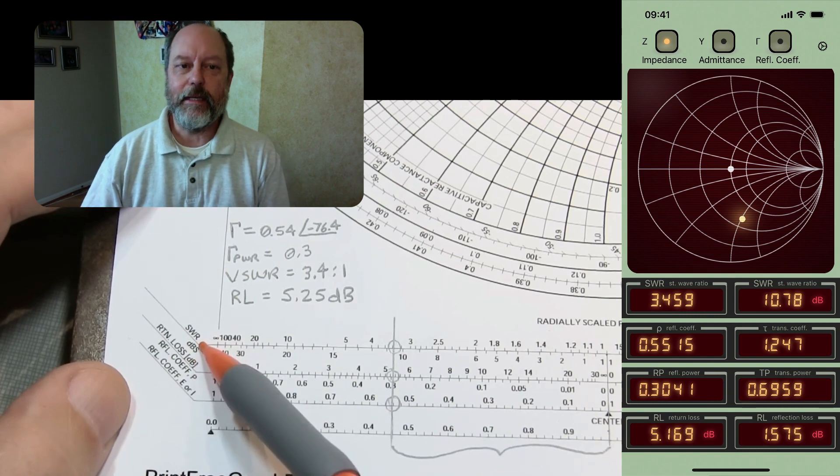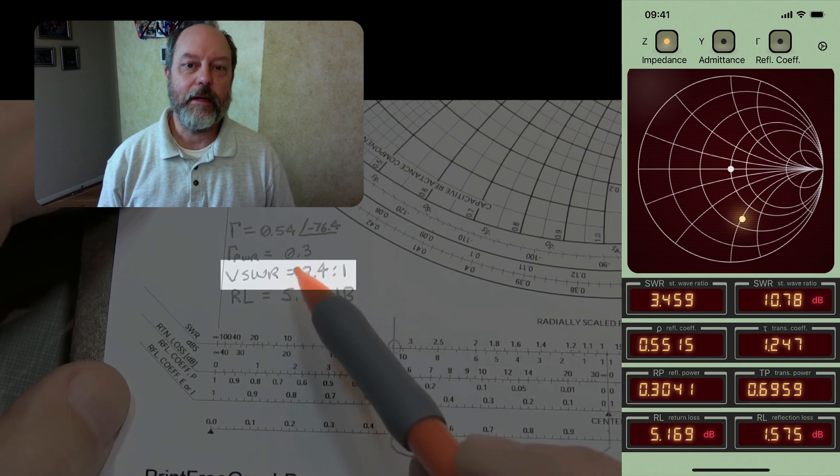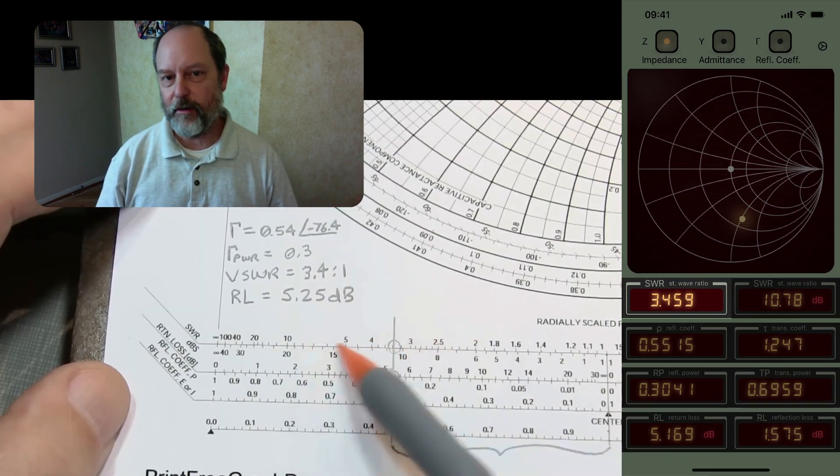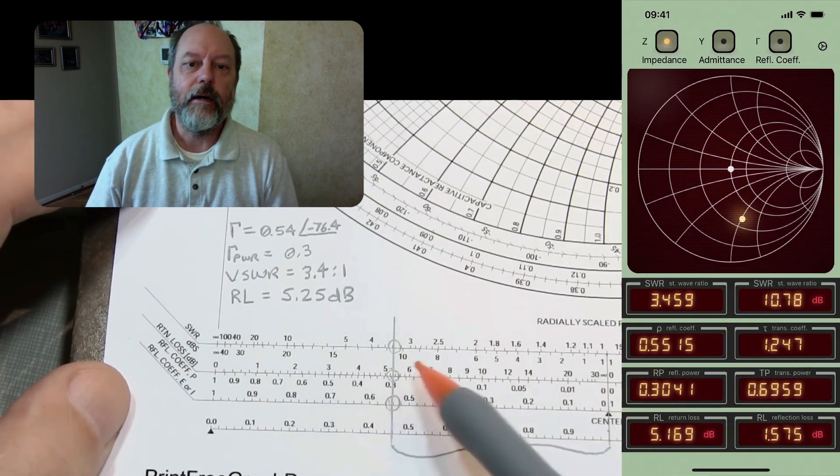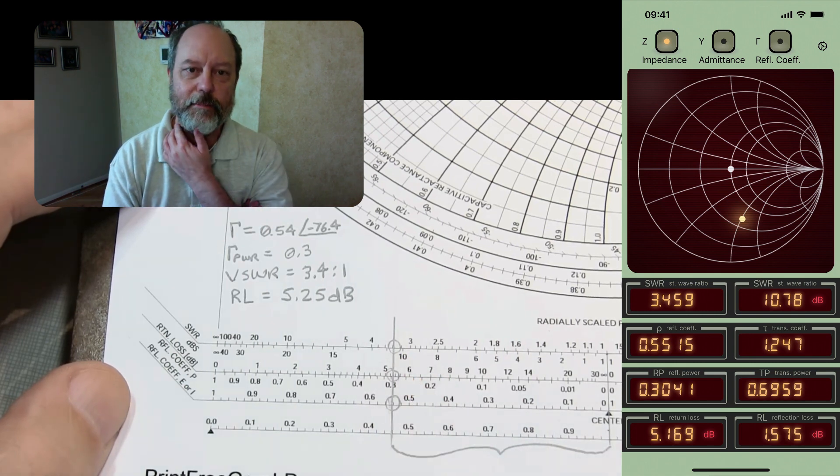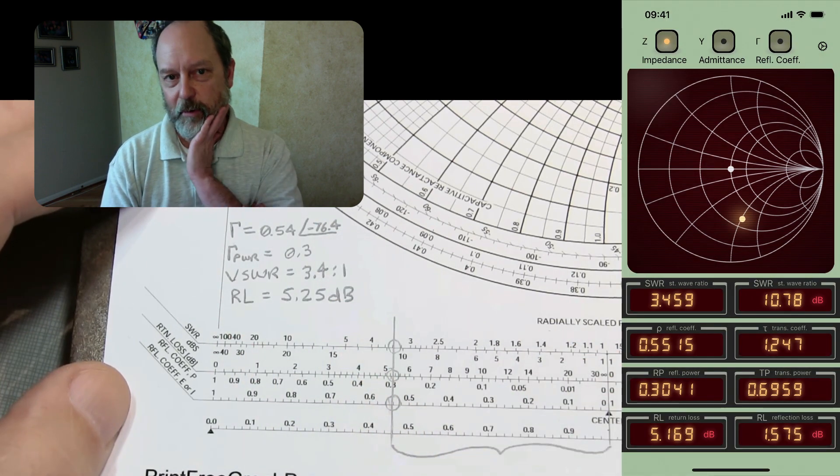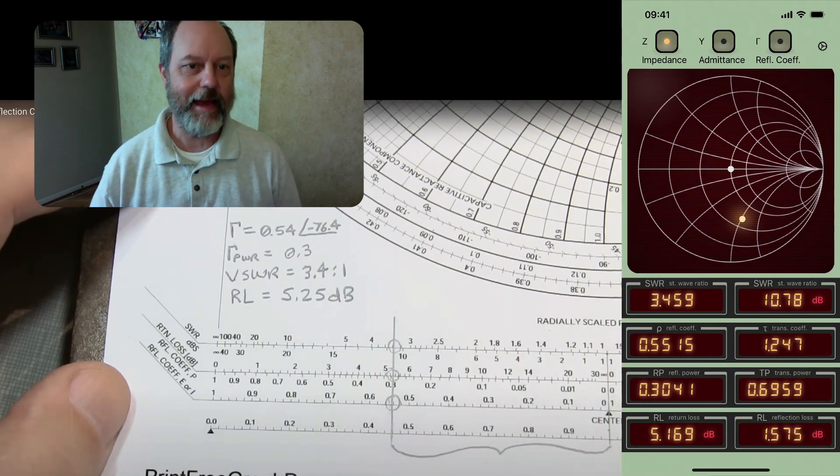And you can see for SWR, Alan gets 3.4, and in the app it's calculated as somewhere between 3.4 and 3.5. And also, SWR being a ratio, you can easily turn it into decibels. So it's 10.6 or 10.7, both according to Alan and the app.